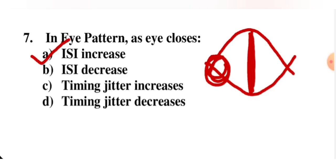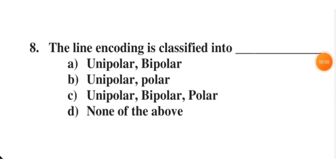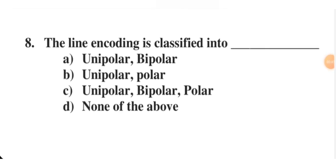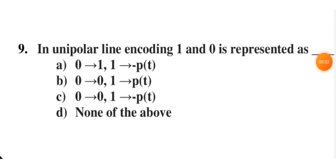Line coding is classified into how many types? The options are unipolar-bipolar, unipolar-polar, or unipolar-bipolar-polar. C is the correct option because we divide line coding into three parts: unipolar, bipolar, and polar.